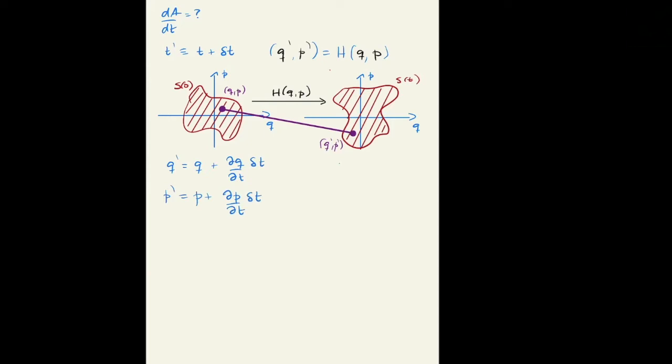And through the Hamiltonian's equations of motion, dQ/dt is the change in the Hamiltonian with respect to momentum, and dP/dt would be the negative of the change of the Hamiltonian in position. So write the first equation as Q plus ∂H/∂P δT, and the second one is P minus ∂H/∂Q δT.